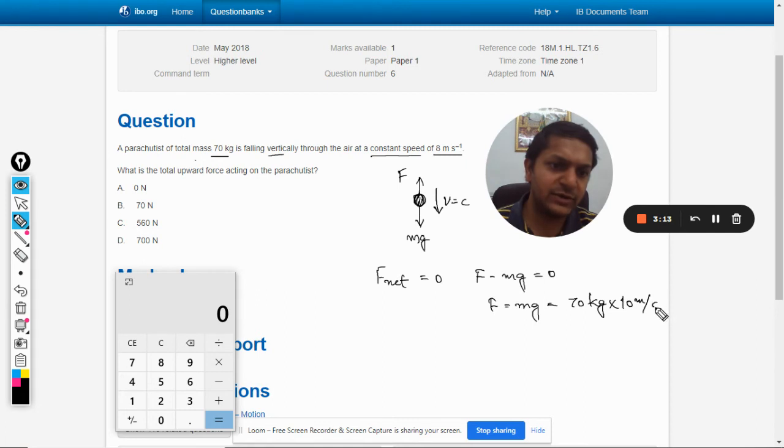So our answer comes out to be 700 newtons with the unit newton. So that is very important. D will be the answer. There is another unit of force instead of newton, and that is kg weight.